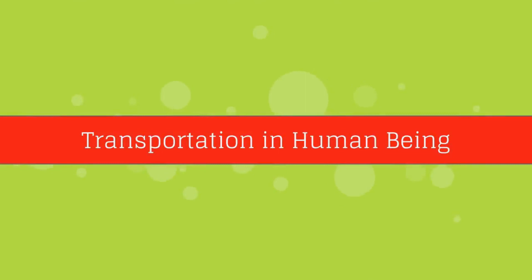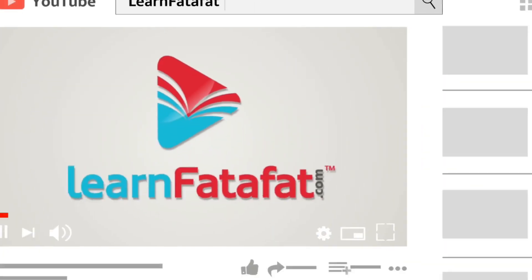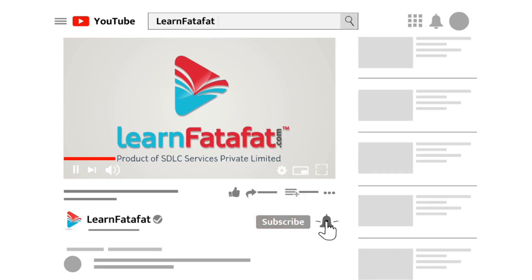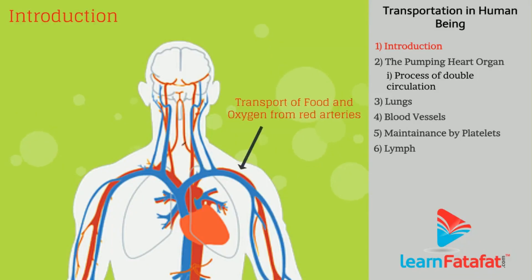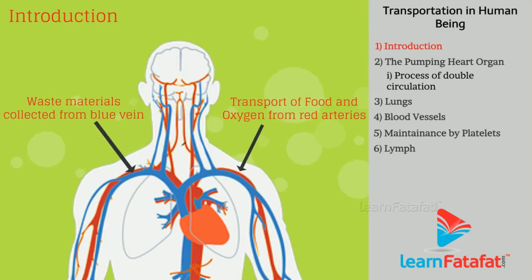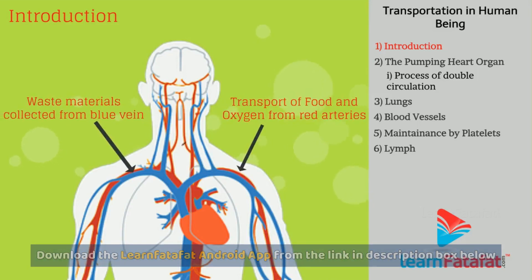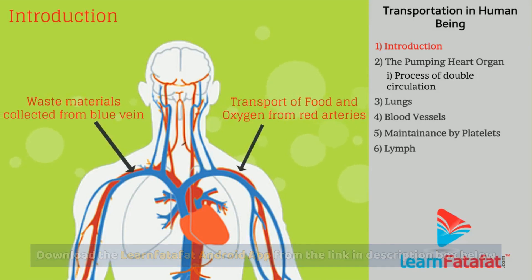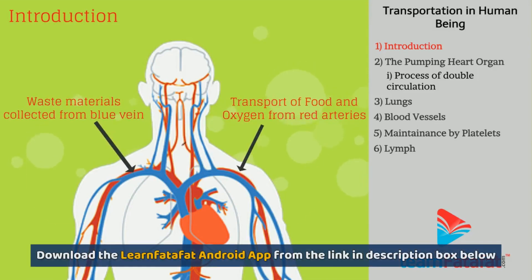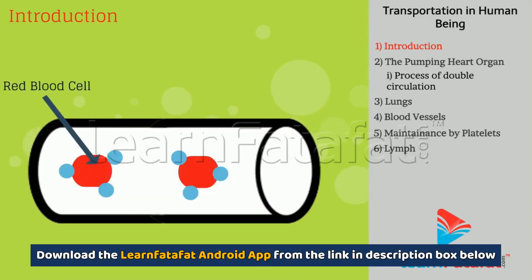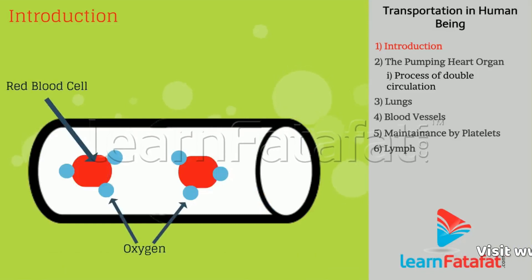Transportation in human beings. In our body, blood is a fluid connecting tissue used to transport food, oxygen, and waste materials. Red blood cells in blood carry oxygen.